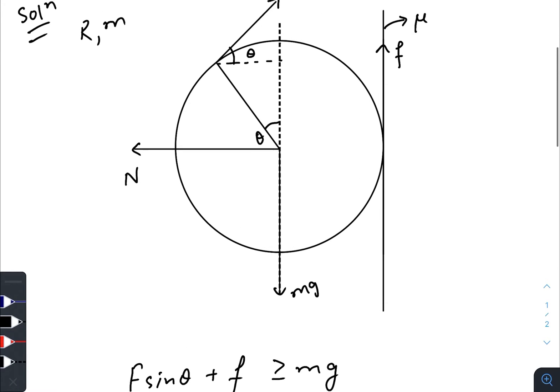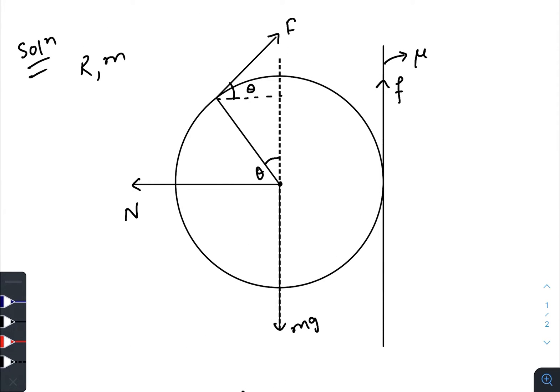So F sin θ plus the friction must be greater than or equal to mg for moving it upwards. If you sit on the center, the clockwise torque is due to this one and the anticlockwise torque is due to friction.